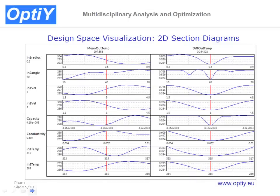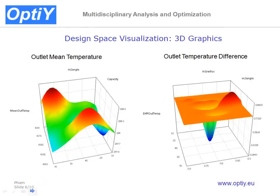We get the response surface of the design space in 3D graphics. This is the blue line; the red lines are the actual values of the design parameters. This is the mathematical relationship between design parameters and the design goal. We also get the design space in 3D graphics showing the design goal in dependence on two design parameters.